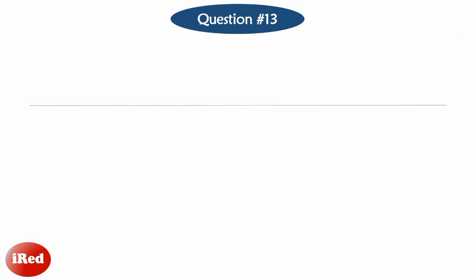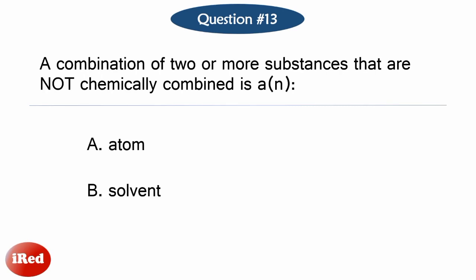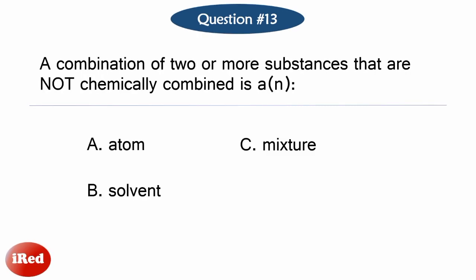Number thirteen: A combination of two or more substances that are not chemically combined is — Letter A: An atom. Letter B: A solvent. Letter C: A mixture. Or letter D: An element.